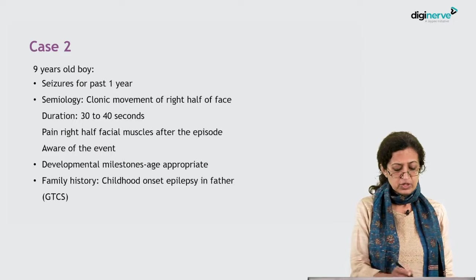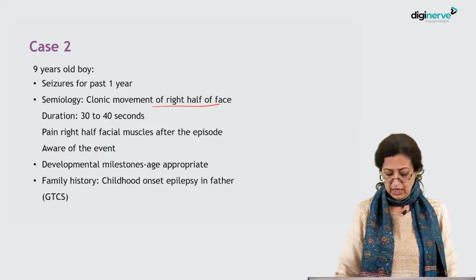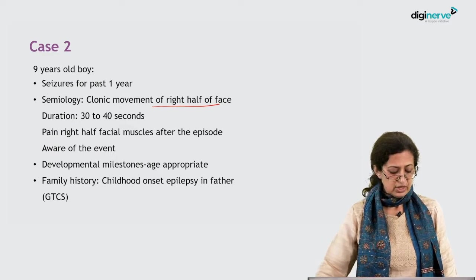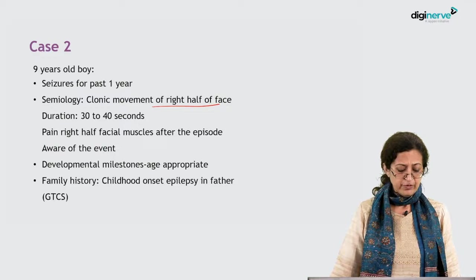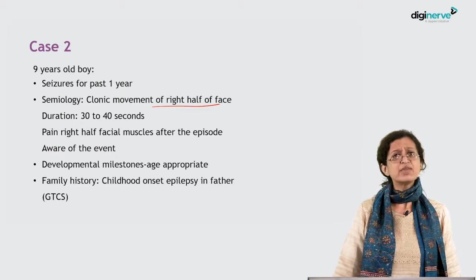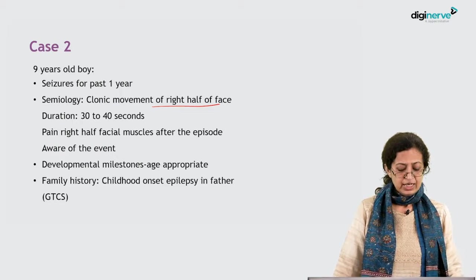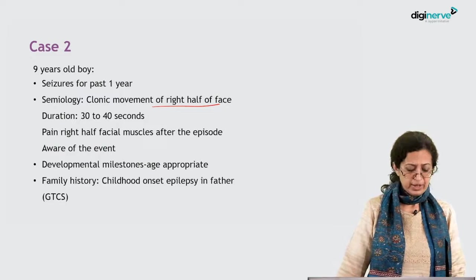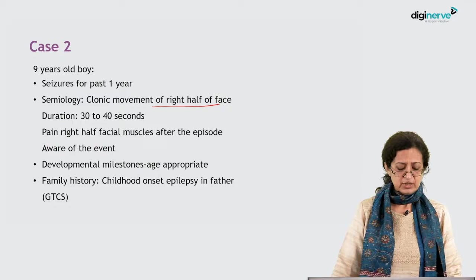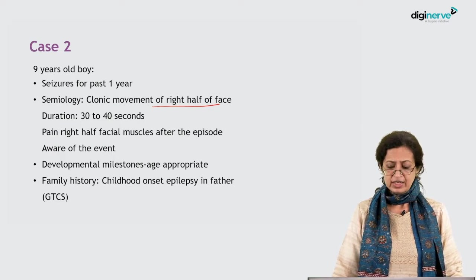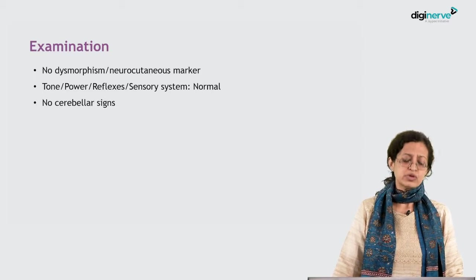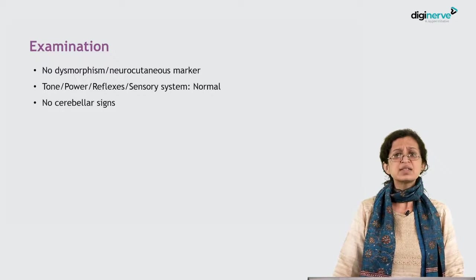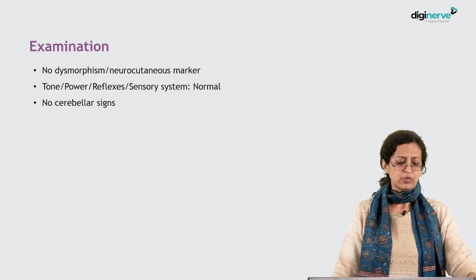The second case is a nine-year-old boy with seizures for the past one year. The semiology was clonic movement of the right half of the face, duration 30 to 40 seconds, with pain in the right facial muscles after the episode. He was aware of the event. Developmental milestones were age-appropriate and family history was positive — father had childhood-onset generalized tonic-clonic epilepsy. Examination was essentially within normal limits.